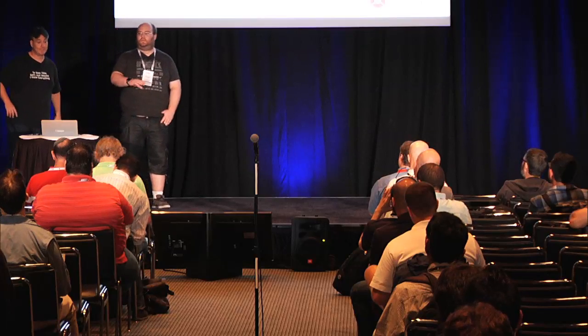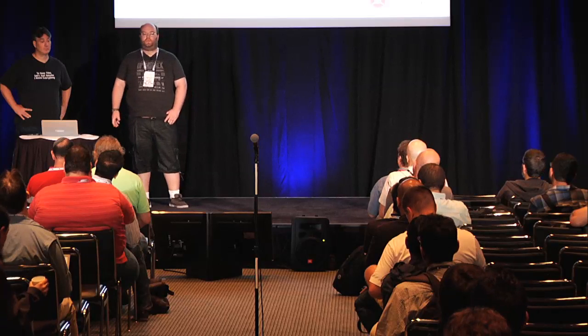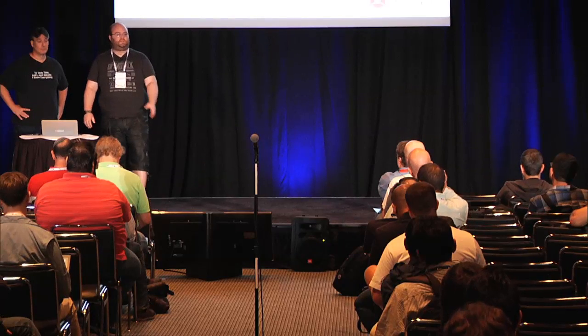One of the first things we did in the v2 API is the ability to import and export BIND 9 zone files. We implemented this using content types. A GET request to a zone with its ID returns a BIND 9 compatible zone file. Similarly, you can import zone files by pushing them up with a text/dns content type and it loads the zone and all records into Designate. We also have a zone extractor tool to generate individual zone files from complex BIND 9 setups for easy loading into Designate.